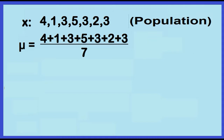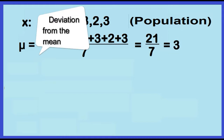This is equal to 21 over 7, which is equal to 3. Second, subtract the mean from each of the data values.